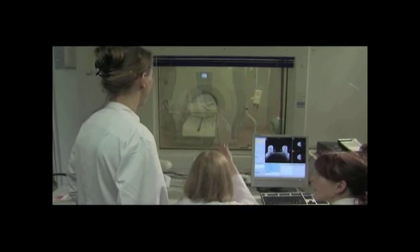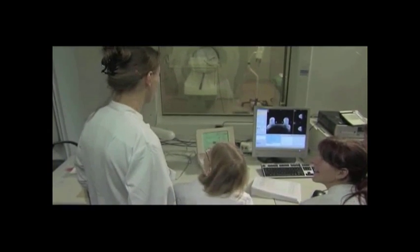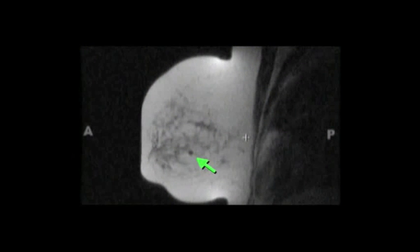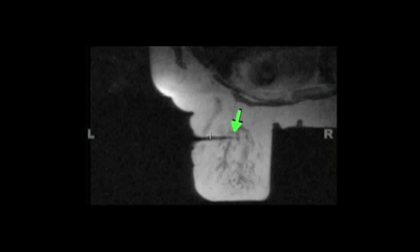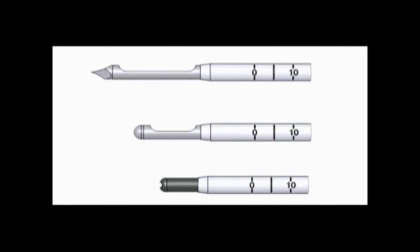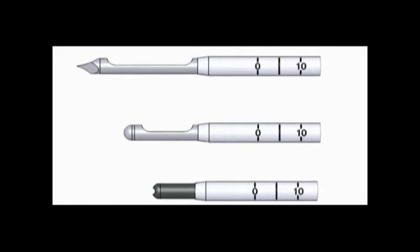Acquire images in the sagittal and axial views to verify target accuracy. The localizing obturator will project as a signal void, appearing as a black dot on the sagittal image and as a black line on the axial image. The tip of the obturator will coincide with the center of the aperture of the biopsy needle.